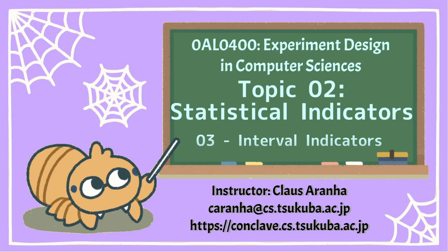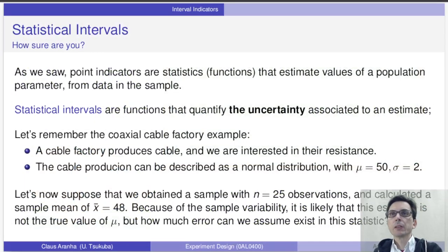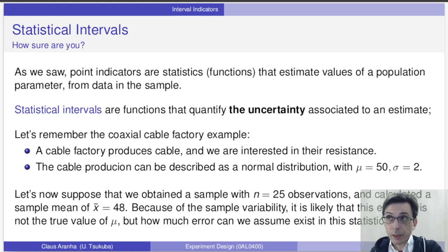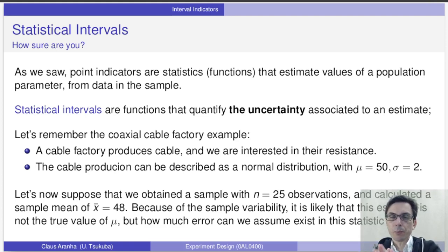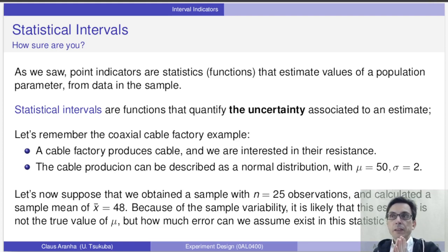In the last video we talked about point indicators and explained that they are functions that use data from an experiment to calculate the value of a parameter in a population model. We also discussed that there is an error and a bias associated with the calculation. Another way to think about this is that there is an uncertainty associated with a point indicator.